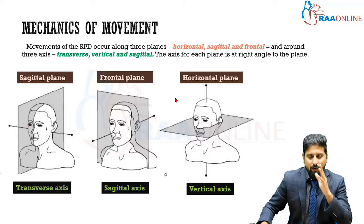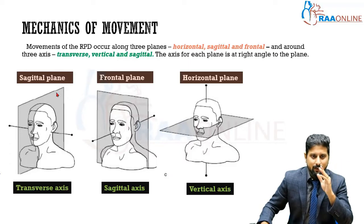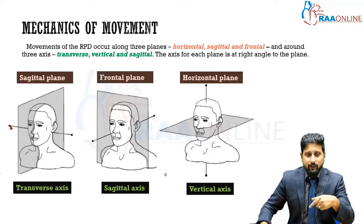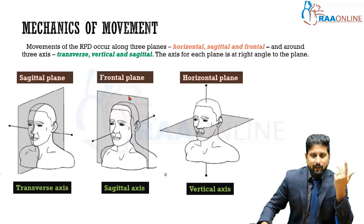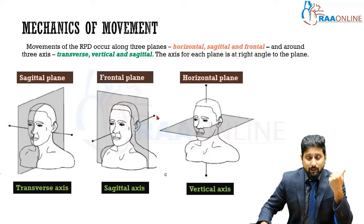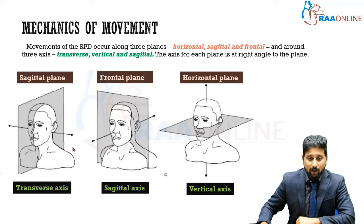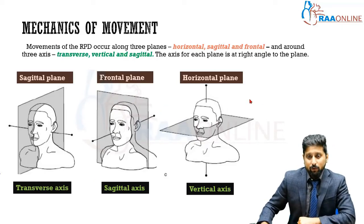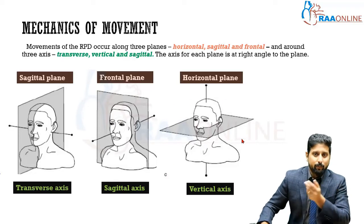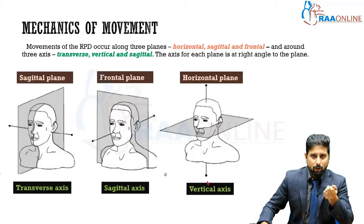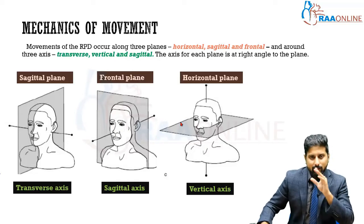You basically have three planes: sagittal, frontal, and horizontal. The axis is always at right angles to the plane. For the transverse or horizontal axis, movement occurs in the sagittal plane — a superior-inferior rotational movement, similar to a car tire. For the frontal plane, movement happens around the sagittal axis along the frontal plane — like a table fan swiveling sideways. For the horizontal plane, there is a vertical axis and movement takes place around the vertical axis along the horizontal plane, like the Earth rotating around its orbit. Any object's movement can be explained via these three planes and three axes.